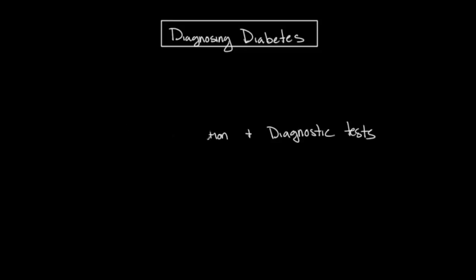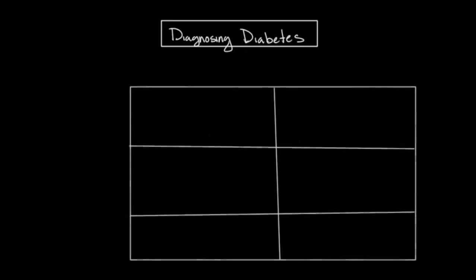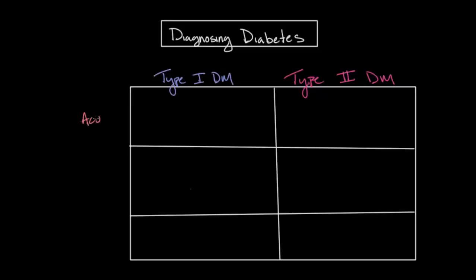Let's start with the presentation of diabetes mellitus. Recall there are two types of diabetes, type 1 and type 2. And depending on the type, the disease presentation will differ. There are three main ways in which someone with diabetes will present before they're diagnosed: acute, subacute, and asymptomatic.